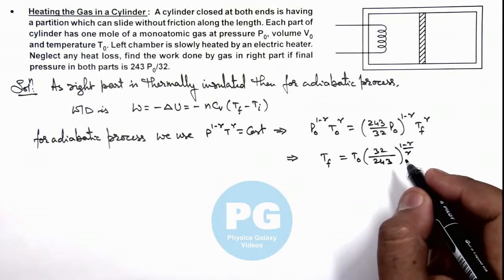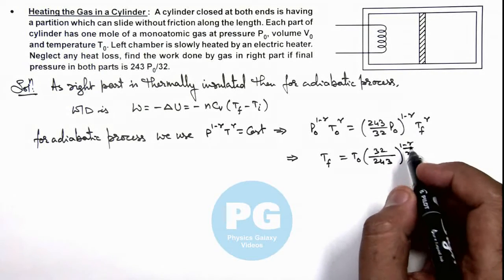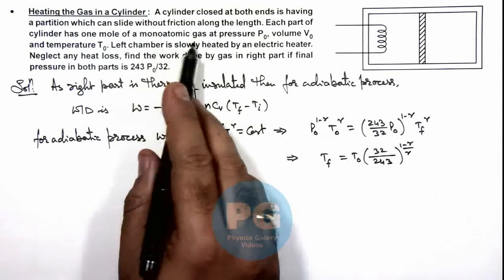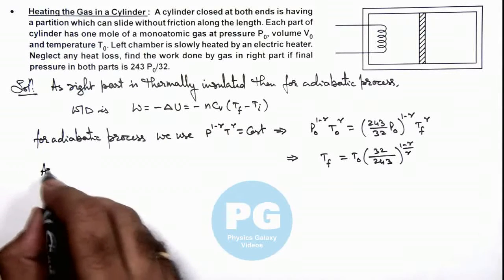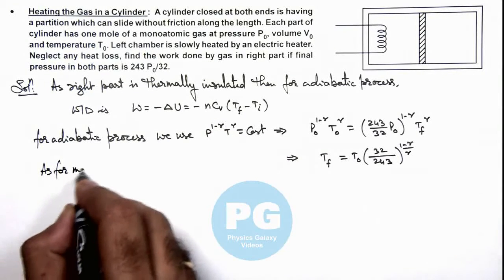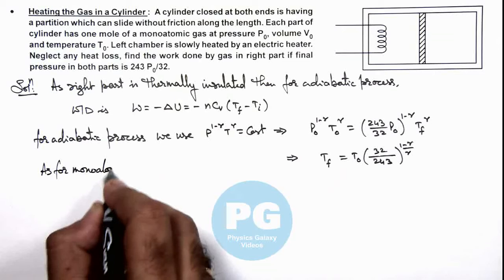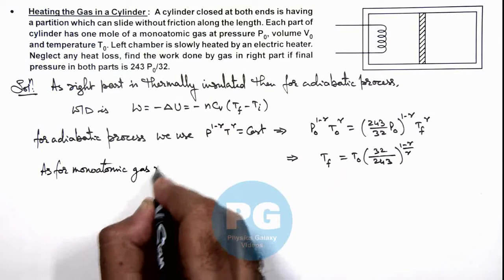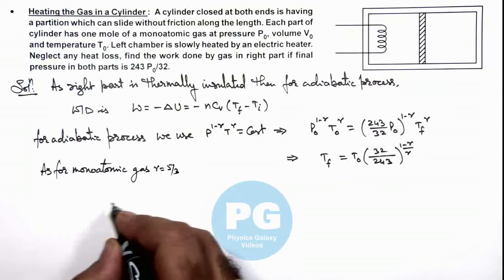As we know the value of gamma for a monoatomic gas is 5/3, we can write for monoatomic gas, gamma is equal to 5/3.